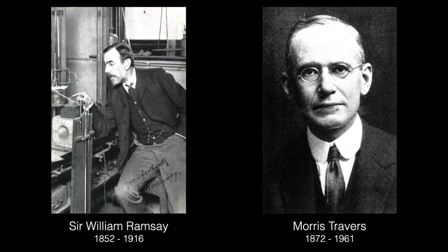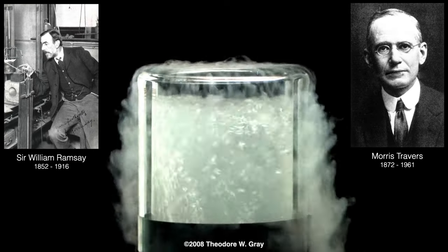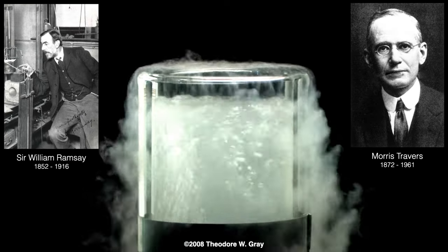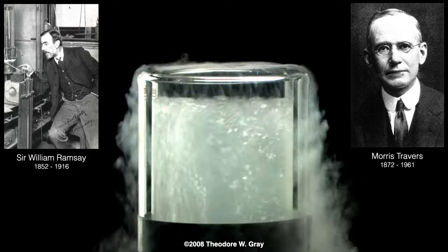Xenon was discovered in England by Sir William Ramsey and Morris Travers in September 1898, shortly after their discovery of the elements krypton and neon. They found xenon in the leftovers from evaporating liquid air. More on that in a moment.